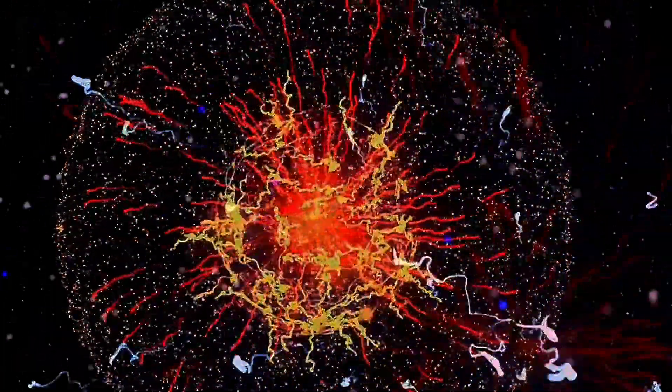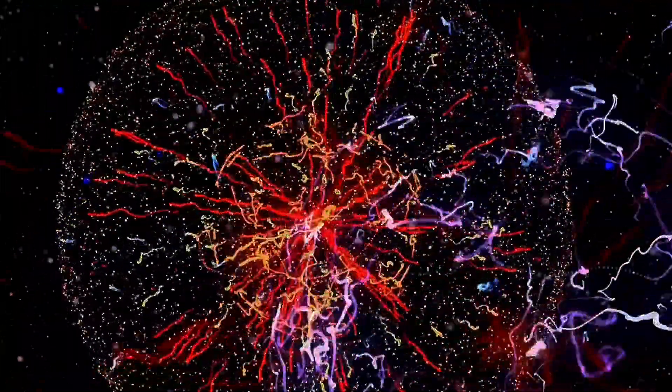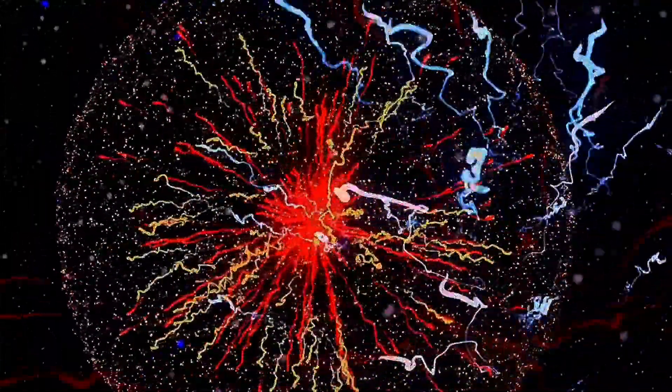Despite the universe's high density back then, it didn't collapse into black holes because the matter was evenly distributed. The universe's earliest phases are shrouded in mystery due to a lack of data, but common models paint a picture of a homogeneous isotropic state with high energy density and rapid expansion.